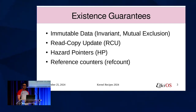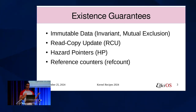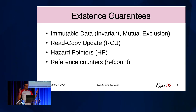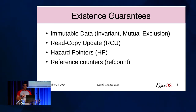A few words about existence guarantees. There are various mechanisms that provide existence guarantees. What I mean by existence guarantees is: when you hold a pointer, you are guaranteed that accessing the object will not cause any segmentation fault — you are certain that the memory there exists. One way to do it is to have immutable data, there for the entire lifetime of your system. Mutual exclusion is another way to temporarily provide an existence guarantee, but that comes with overhead. Read-copy update, hazard pointers, and reference counters are other mechanisms for that.